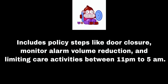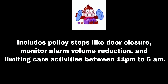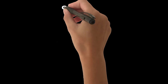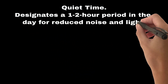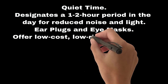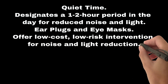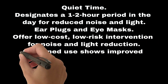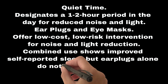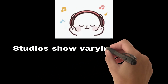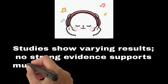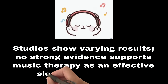Individual components include noise reduction through door closure, monitor alarm volume reduction, and limiting care activities between 11 p.m. and 5 a.m. Quiet time designates a one-to-two-hour period for reduced noise and light. Earplugs and eye masks offer a low-cost, low-risk intervention; combined use shows improved self-reported sleep, but earplugs alone do not offer substantial evidence for improvement. No strong evidence supports music therapy as an effective sleep aid in the ICU.